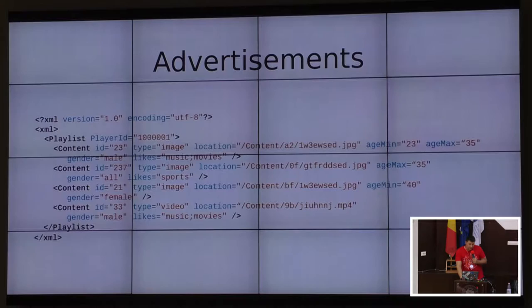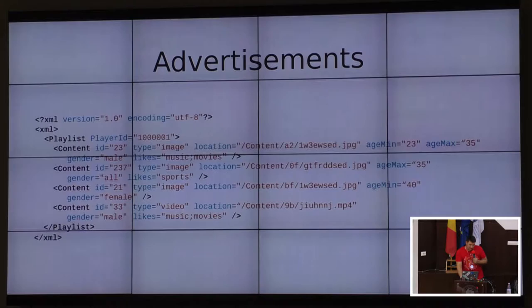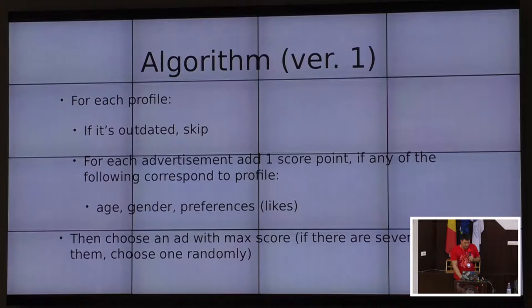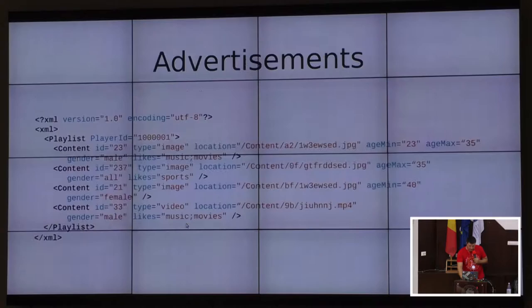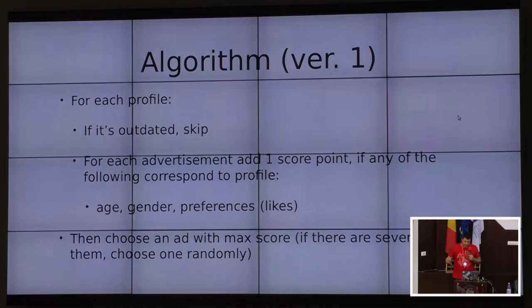The file of advertisements contains ID, image URL, and some parameters like minimum and maximum age of the user, preferred gender, and preferences of the user. I initially wrote a very simple algorithm which just loaded both files, skipped outdated profiles — there was a requirement to check the profile timestamp — and added one score point for each matching parameter of the advertisement, like age, gender, or preferences.